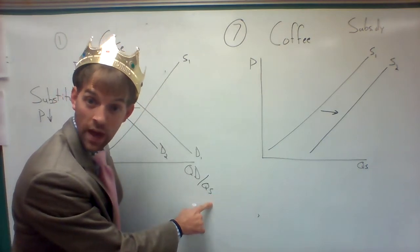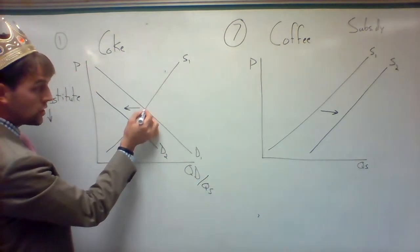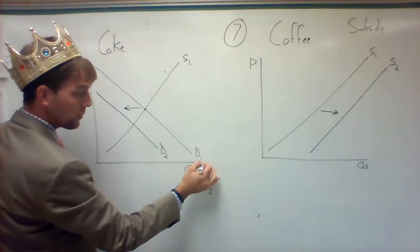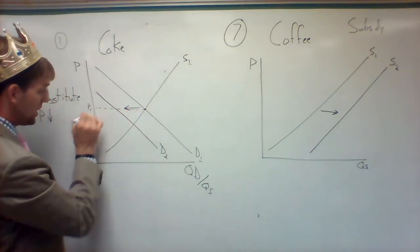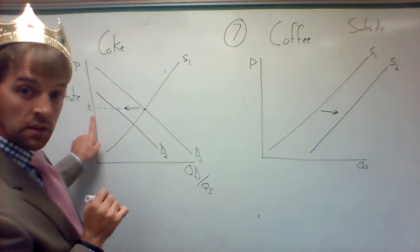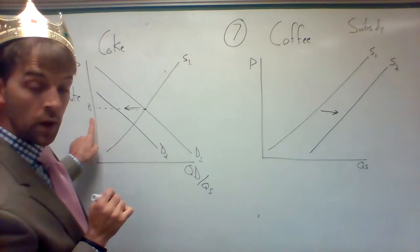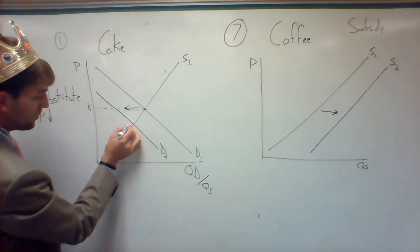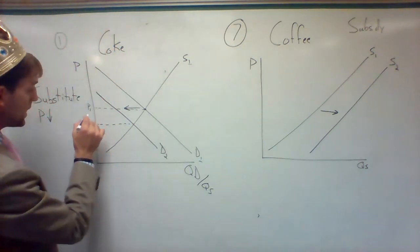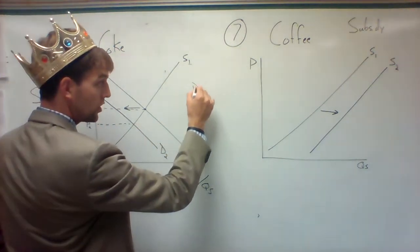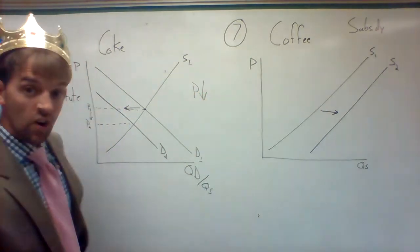Go to where the original number one and number one curves met and make a little P1 dot, like I did. That's the original price. Go to the second one, make a P2. What do you notice happens to the price here? It's going down, so the price of Coke falls when the substitute price falls.